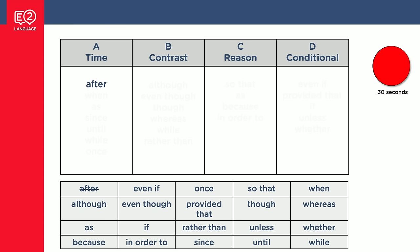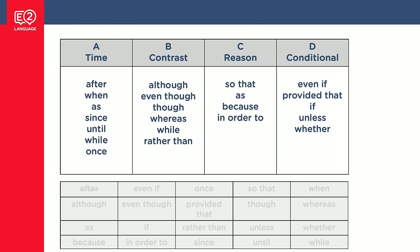And here they are. Time conjunctions: after, when, as, since, until, while, once. Contrast: although, even though, though, whereas, while, rather than. Reason: so that, as, because, in order to. And conditional: even if, provided that, if, unless, whether. You'll notice a couple of the words fit into more than one column.